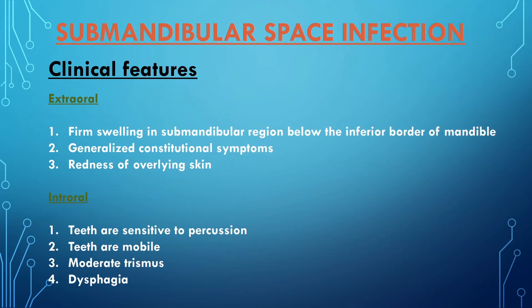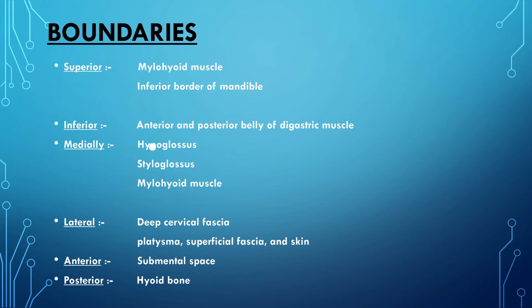The clinical features of submandibular space infection include both extraoral and intraoral findings. The extraoral symptoms include firm swelling in the submandibular region below the inferior border of the mandible, generalized constitutional symptoms, and redness of the overlying skin. The intraoral findings include teeth sensitive to percussion, the offending teeth are mobile, there is moderate trismus, and there is dysphagia.